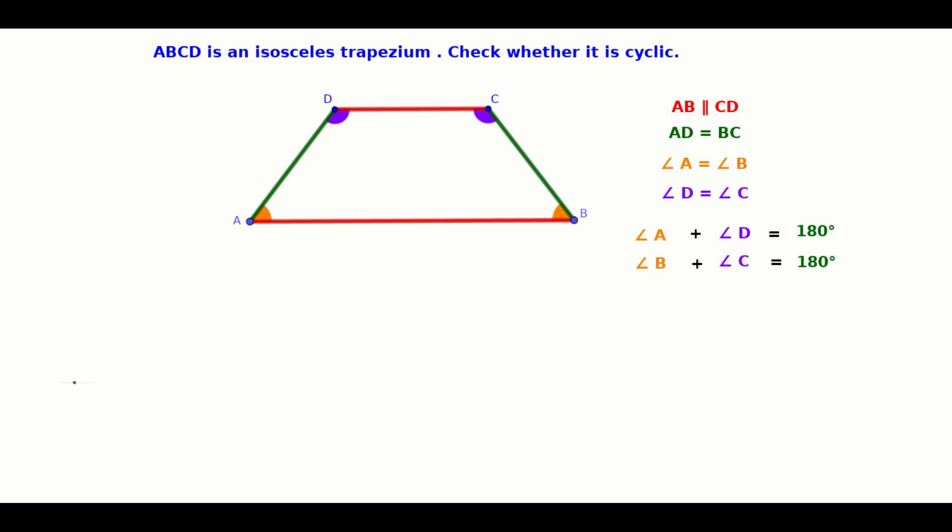Now, let's check whether the isosceles trapezium ABCD is cyclic or not. We know that in a cyclic quadrilateral, opposite angles are supplementary.